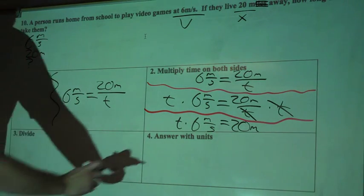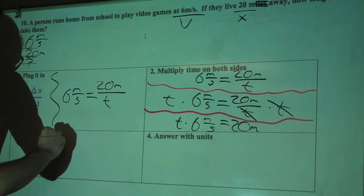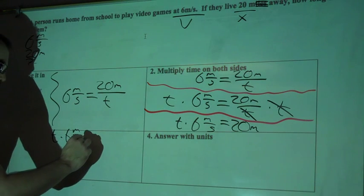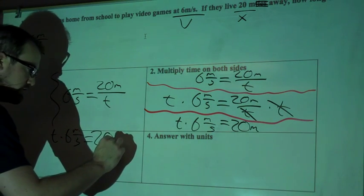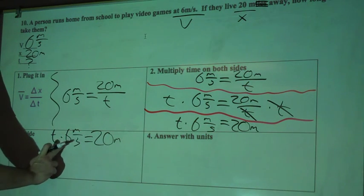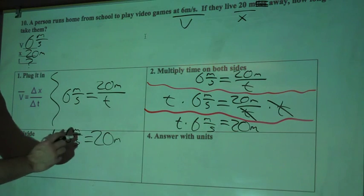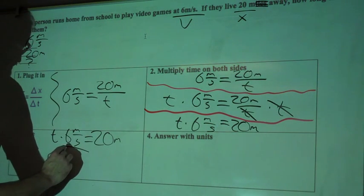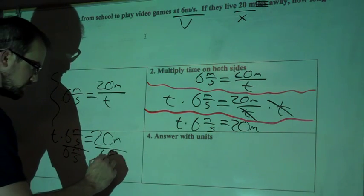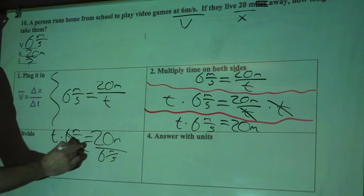The next thing we have to do is divide. We want to isolate the variable T, solve for it. So I'll rewrite my equation down here. So T times 6 meters per second equals 20 meters. If I'm trying to get T by itself and it's being multiplied by 6 meters per second, I can do the opposite operation there to get rid of the 6 meters per second. So divide 6 meters per second, divide 6 meters per second. 6 meters per second and 6 meters per second cancel out.